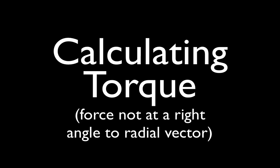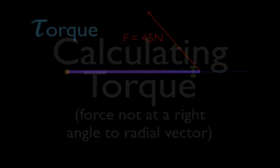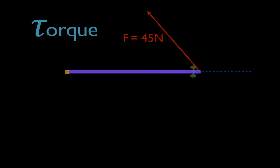In today's video I'm going to show you how to calculate torque, and in this video the applied force and the radial vector will not be at right angles to each other. In the previous video I showed you how to calculate torque when the force vector and the radial vector are at right angles to each other. In this case, as you can see, they will not be.